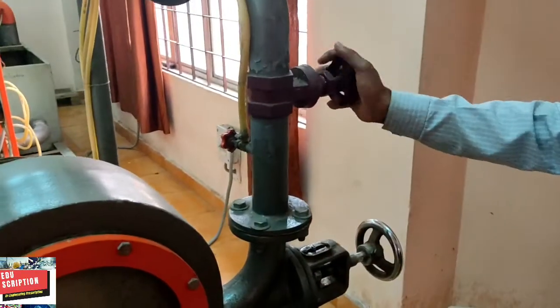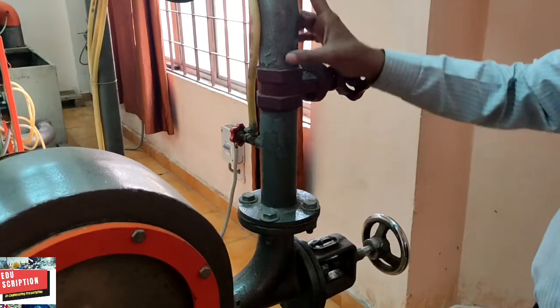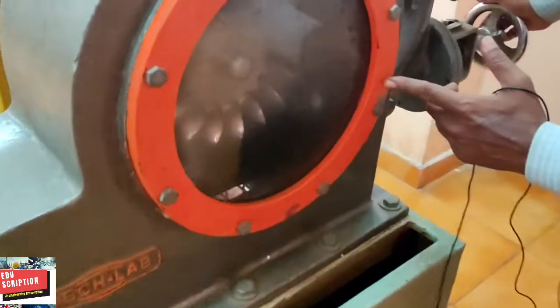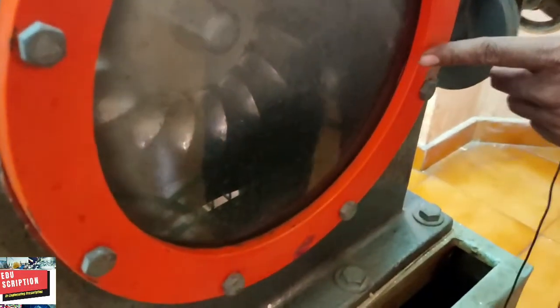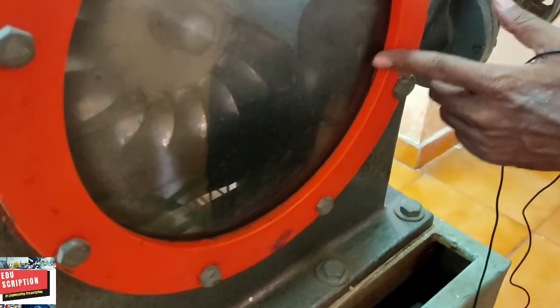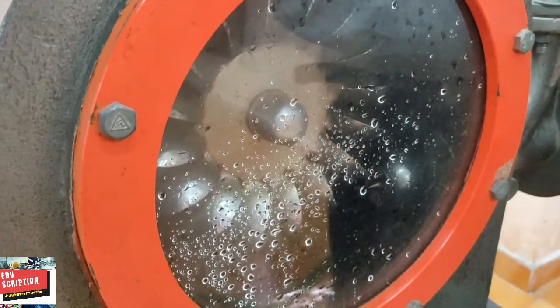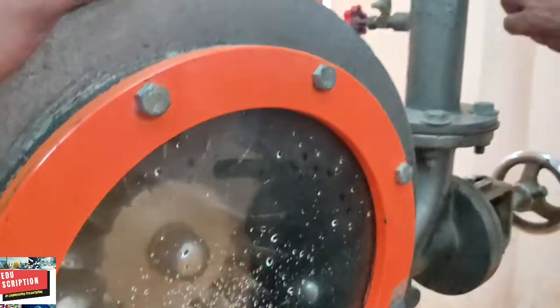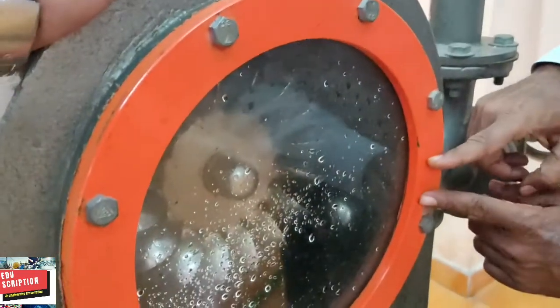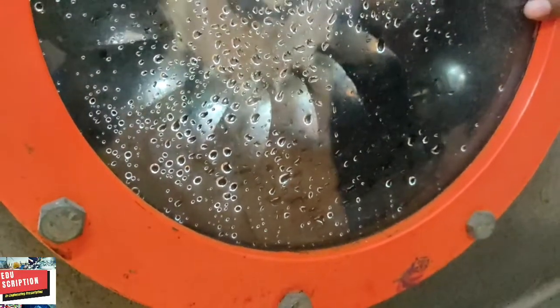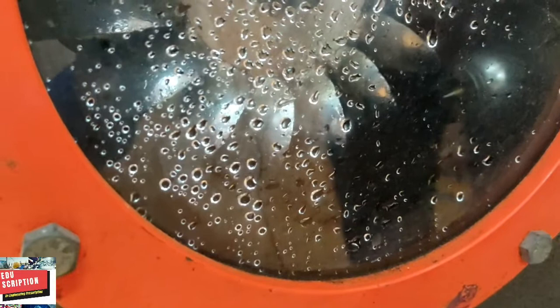When we open this valve, automatically the water rushes towards here and goes through the nozzle path. Inside, one nozzle path is here and one nozzle path is there. The water with high pressure, when we open this valve, automatically goes through this nozzle path. Here in between this path, one spear is there.